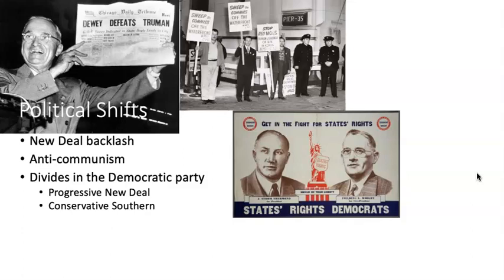Then you have more conservative Southern Democrats — the traditional power base in the Democratic Party — who are obviously not keen on racial equality for African Americans. Strom Thurmond, for example, and the States' Rights Party, Southern Democrats from South Carolina. This is 1948 when the States' Rights Democrat Party ran for president. Interestingly, who is the South Carolina senator that follows Strom Thurmond when he leaves office? Lindsey Graham. Strom Thurmond was in office from the late 1940s all the way until 2003 — kind of incredible.